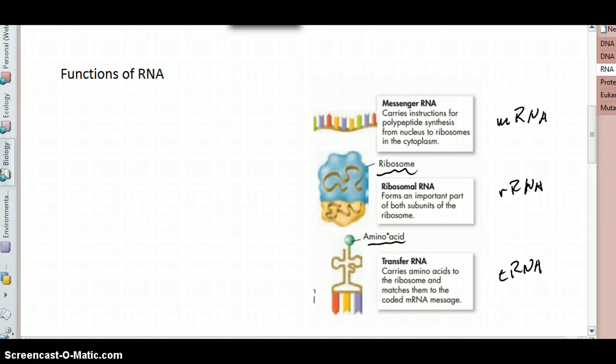The messenger RNA is the one we'll probably focus on the most because it basically, as it says here, has the instructions for making the protein. That is, the sequence of bases in the RNA, the A, U, C's, and G's, determines the sequence of amino acids in your protein.